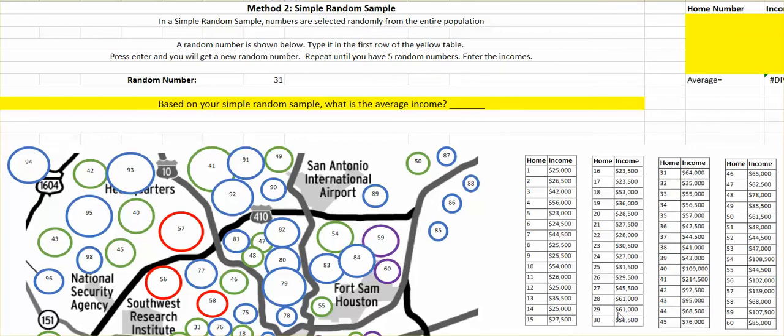And I'm going to look at the table to find out that home 31 had an income of $64,000. Let's fill that into the table. You'll notice that when I typed that in, it automatically gave me another random number. So now I'm going to use home 87. Find that income and type that in. Continue this process until you have five random numbers, and then use that to find the average income.